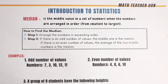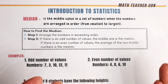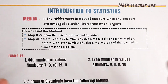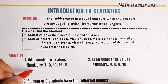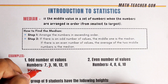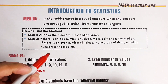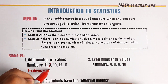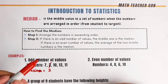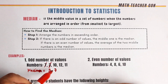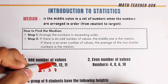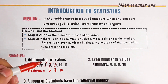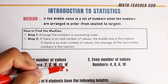So how do we get the median? We need to arrange the numbers in ascending order. Let me arrange this in ascending order. We have 3, then 7, then 10, then 11, and then 12. As you can see, all of these numbers are already arranged.